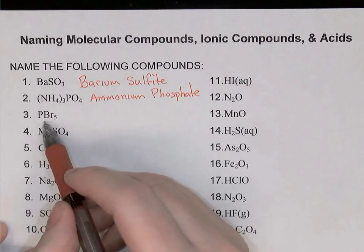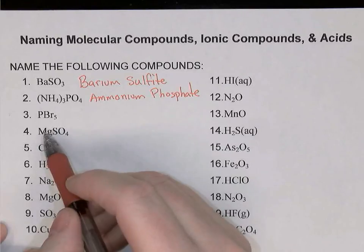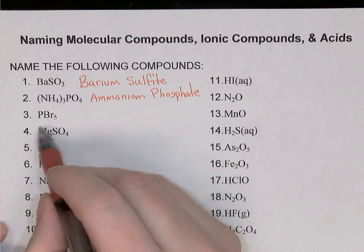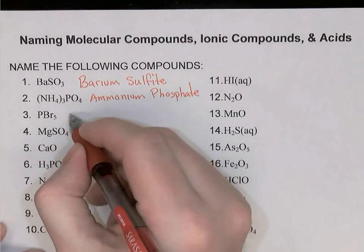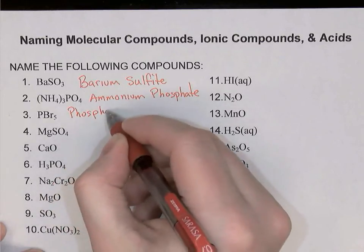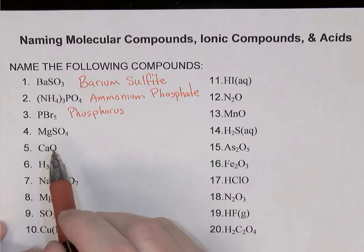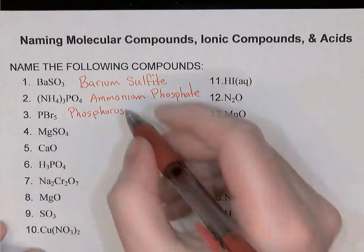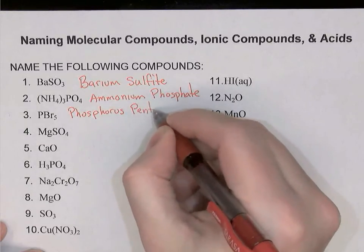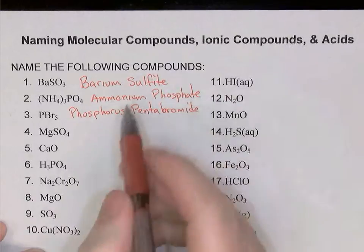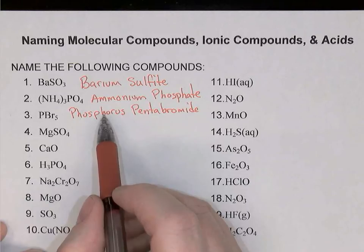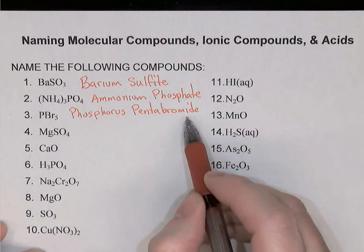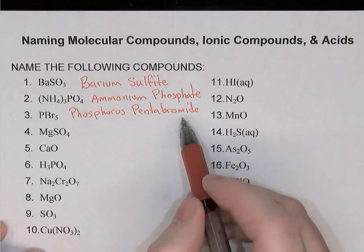PBr5: phosphorus is a non-metal and bromine is a non-metal, therefore this compound is a molecular compound, or covalent. Molecular compounds need prefixes when naming them because there are no ions in the formula. With one phosphorus at the beginning we'll just say phosphorus — you don't use the prefix mono for the first element. Five bromines: the prefix for 5 is penta, so penta-bromide. Notice the first element is named as though it were a cation — same as on the periodic table — while the second element is named as though it were an anion: bromide.